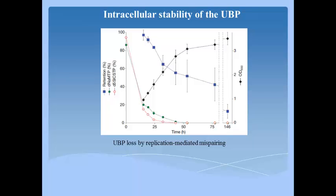Authors monitored cell growth and unnatural triphosphate decomposition for up to 6 days without providing any additional unnatural triphosphates. At 15 and 19 hours of growth, the cultures reached an optical density at 600 nanometers of approximately 0.9 and 1.2 respectively. Both unnatural triphosphates decomposed to 17 to 20 percent and 10 to 16 percent of their initial concentration. Retention of unnatural base pair after 15 hours was 97% and 95% as determined by gel shift and sequencing respectively, and after 19 hours it was 91% and 95%.